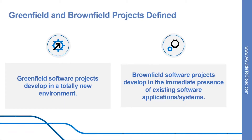The terms Greenfield and Brownfield have their origins in residential and industrial building projects. A Greenfield project is one done on a greenfield — that is, undeveloped land. A Brownfield project is one that was done on land that was previously used for other purposes.